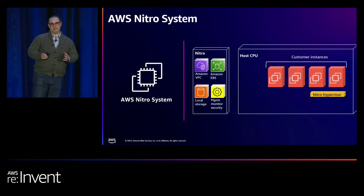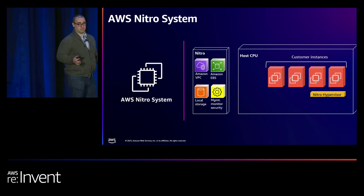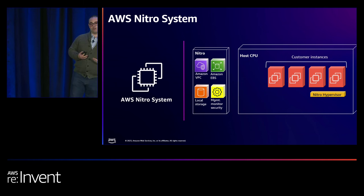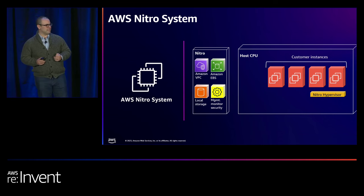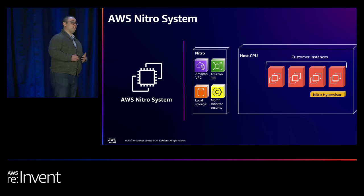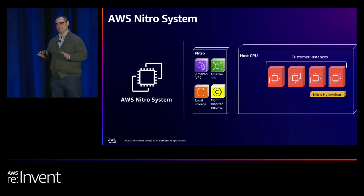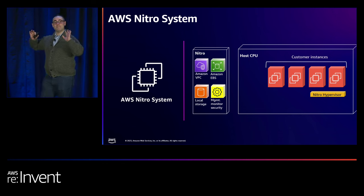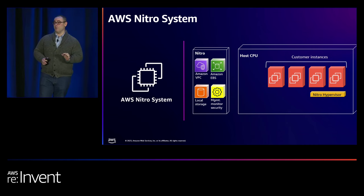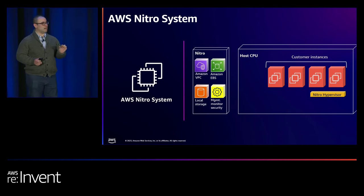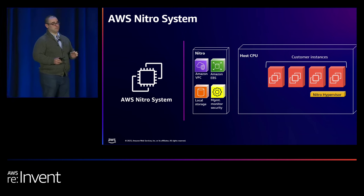From the performance standpoint, we were able to dedicate the full resources of the underlying host servers for EC2 directly to our customers, providing huge improvements in jitter, performance, and cost value propositions. The Nitro system is built of three main types of components: Nitro cards, the Nitro security chip, and the Nitro hypervisor. There are also incredible security and privacy benefits beyond just performance.